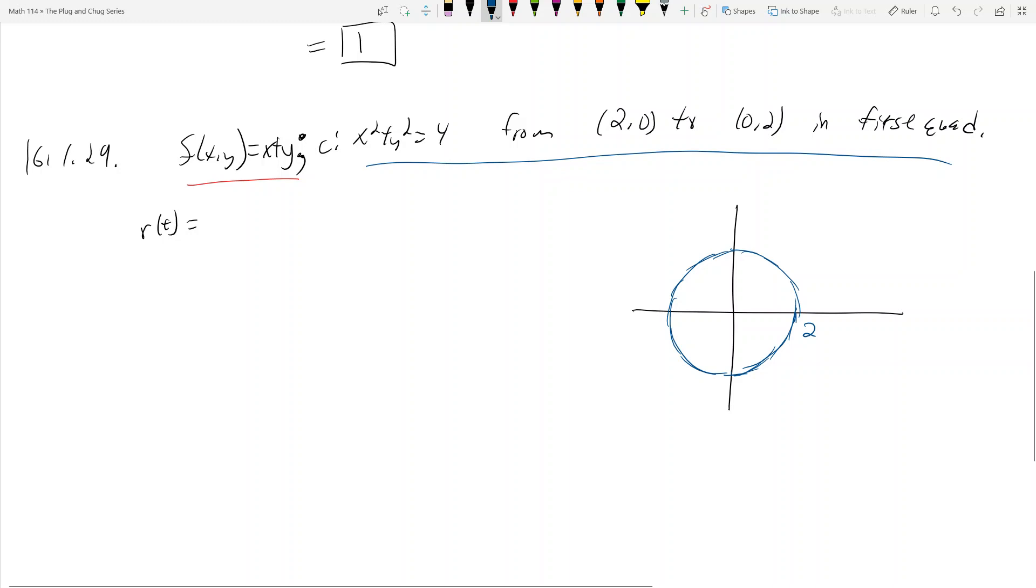And then going from 2, 0 to 0, 2. So here's 2, 0, and here's 0, 2. And so we really only care about this part in the first quadrant. So going from 2, 0 to 0, 2. And so how do we parametrize that?